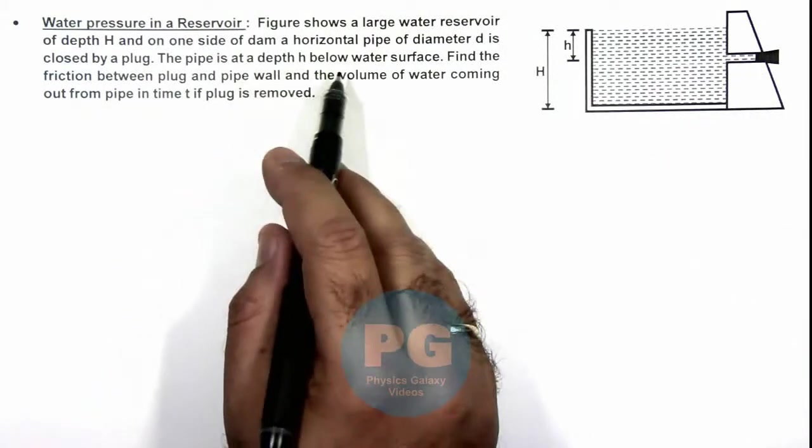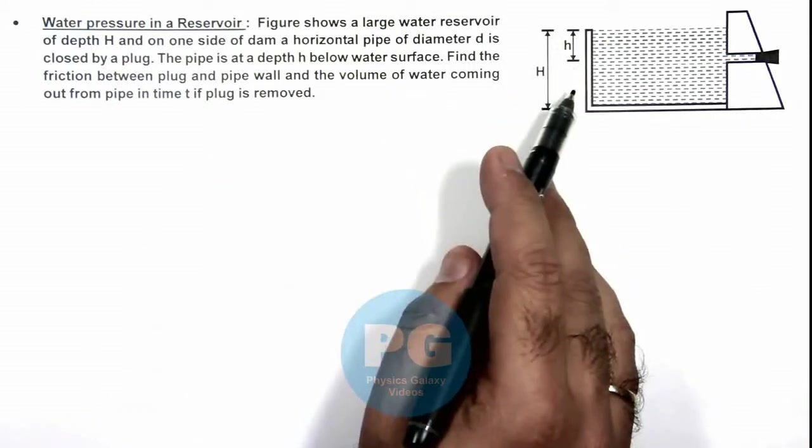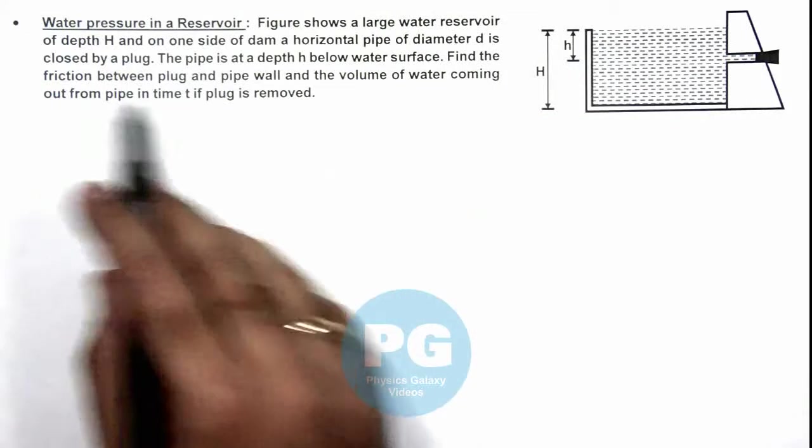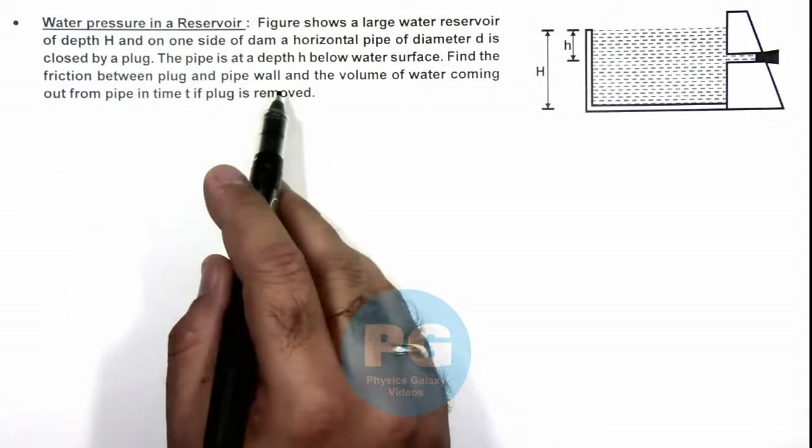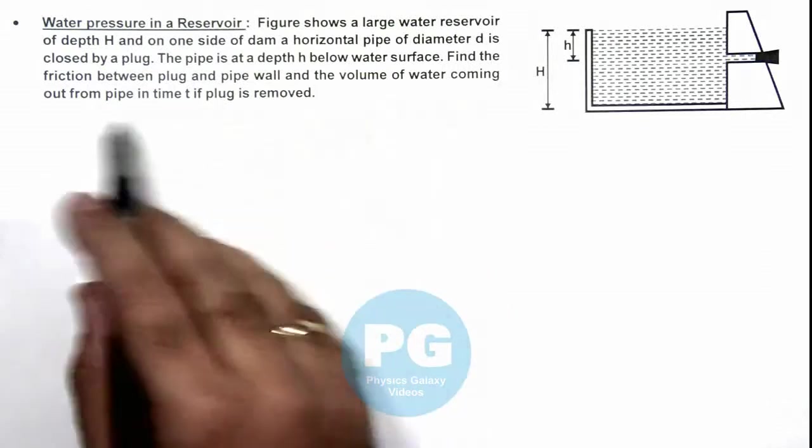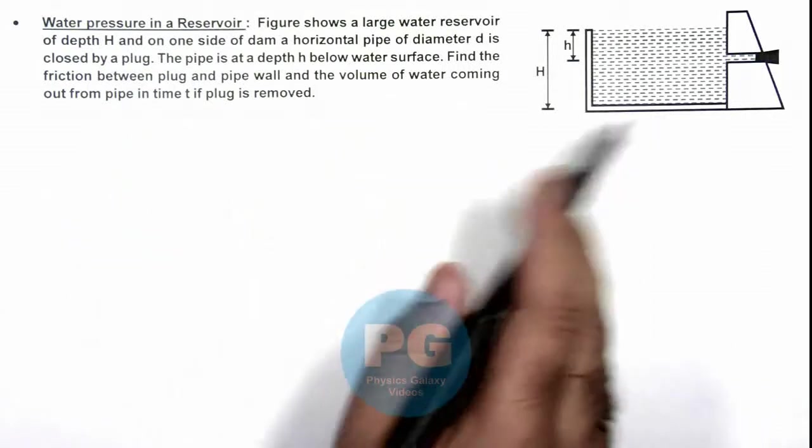The pipe is at a depth h below the water surface. We are required to find the friction between plug and pipe wall and the volume of water coming out from pipe in time t if the plug is removed.